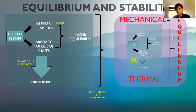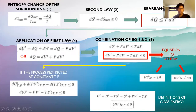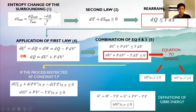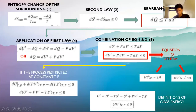Imagine this system is placed in surroundings where mechanical and thermal equilibrium exist, so heat exchange and expansion work are then accomplished reversibly. Under these circumstances, the entropy change of the surroundings is: dS_surroundings = dQ_surroundings / T_surroundings = -dQ / T, where the final term applies to the system. The temperature of the surroundings is replaced with the temperature of the system because both have the same value for reversible heat transfer.